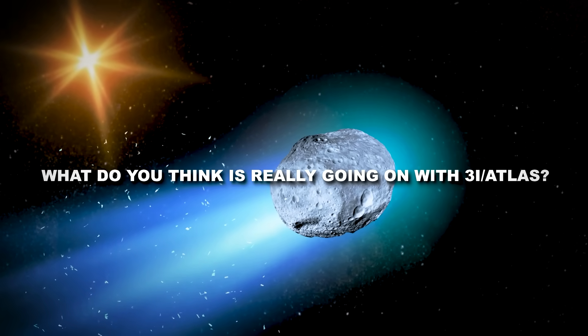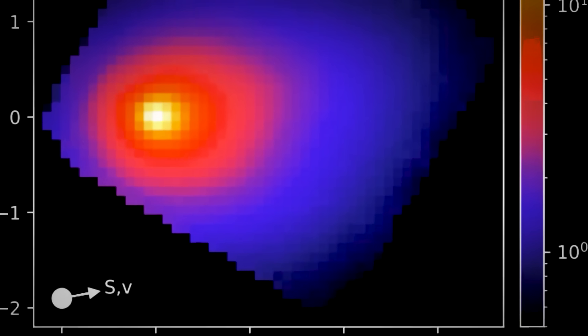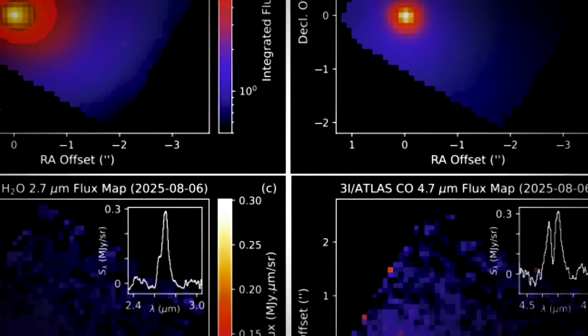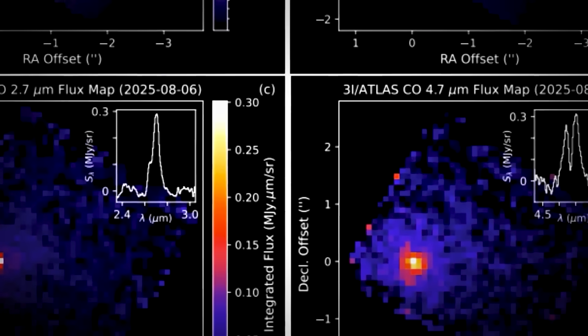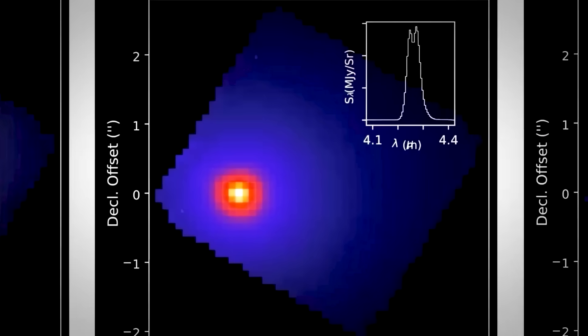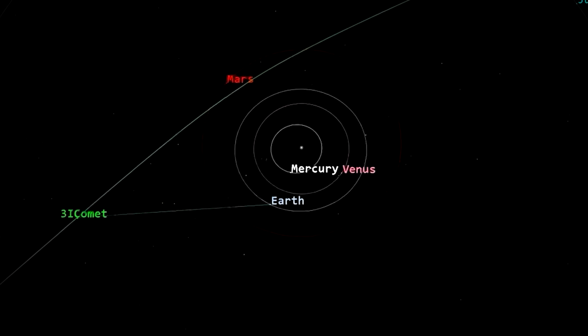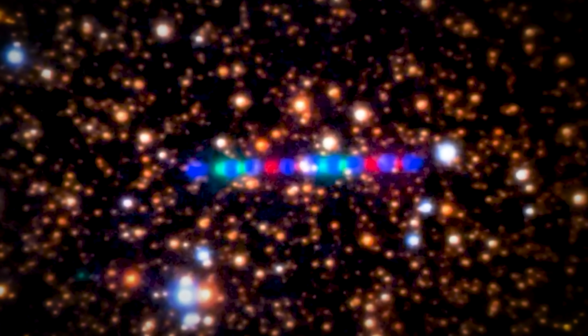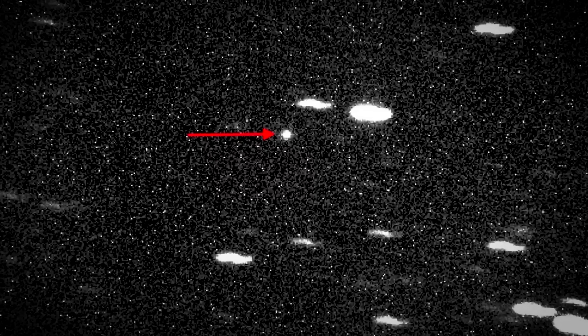What do you think is really going on with 3I Atlas? Is it a natural comet with unusual properties or something far more extraordinary? Drop your thoughts in the comments below. I read every single one and love hearing your theories. If this video got you thinking about the mysteries lurking in our cosmic neighborhood, smash that like button and share it with someone who loves space mysteries as much as you do. Your support helps us dive deeper into these incredible discoveries.